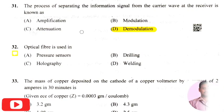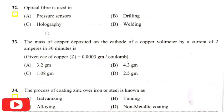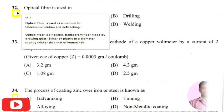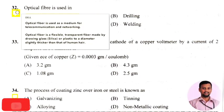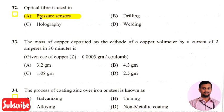The next question: the optical fiber is used in — the right answer is option one, that is pressure sensors. An optical fiber is a flexible transparent fiber made by drawing glass or plastic to a diameter slightly thicker than a human hair. These are very small in diameter and are used in pressure sensors, and optical fibers also have major applications in the telecommunications industry.